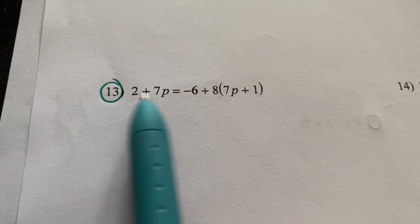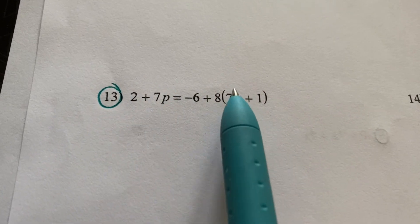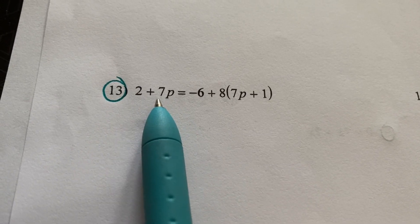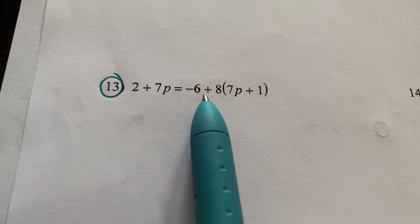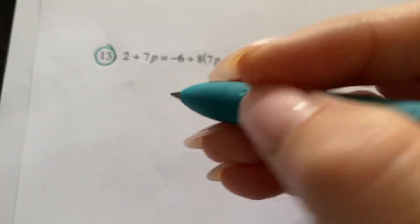So the first step is to combine and simplify on both sides of the equal sign. This one is completely simplified, but this one is not. So we're going to take this side and we're going to simplify it.